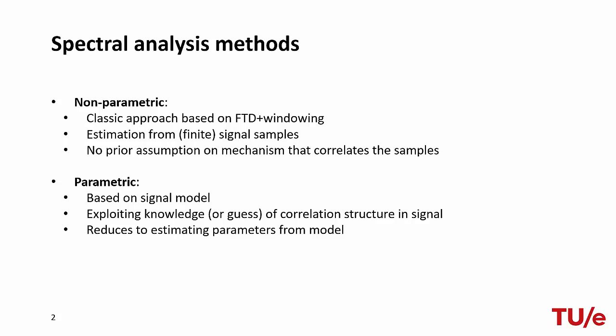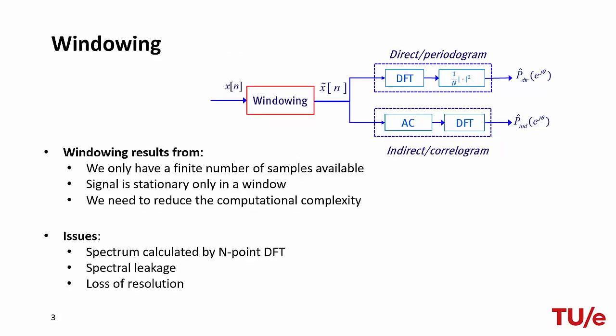In contrast, parametric methods assume that the available data samples were generated by a specific stochastic model governed by a set of parameters, and obtain an estimate of the power spectral density from this model. As discussed previously, in practice the available signal is windowed. Windowing causes loss of resolution and spectral leakage. While the problem of windowing affects both deterministic and stochastic signals, in this screencast we will analyze the performance of different estimators of the power spectral density in the context of random signals.